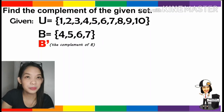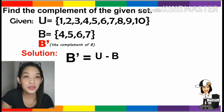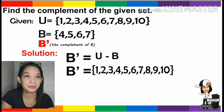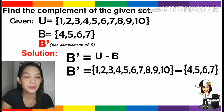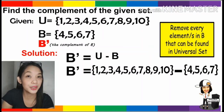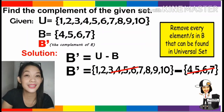To get the complement of B, we compute the universal set minus set B. We must list the elements of the universal set minus the elements of set B, which are 4, 5, 6, and 7. So again, to subtract, we must remove every element in B that can be found in the universal set. Those elements are 4, 5, 6, and 7.